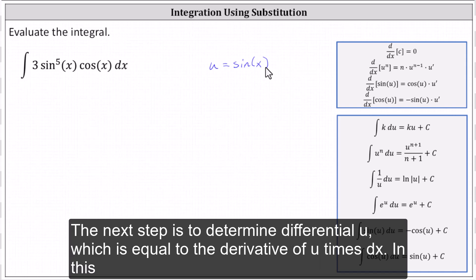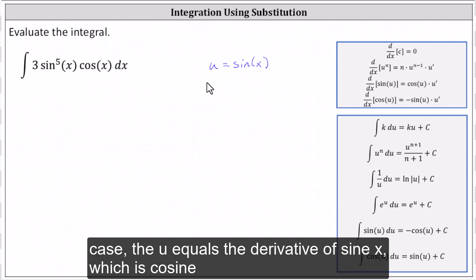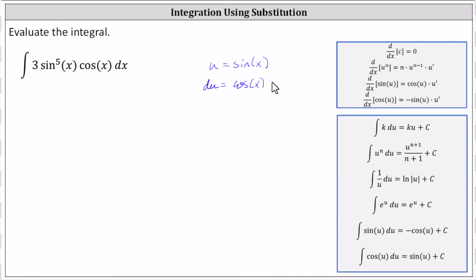The next step is to determine differential u, which is equal to the derivative of u times dx. In this case, du equals the derivative of sine x, which is cosine x times dx.